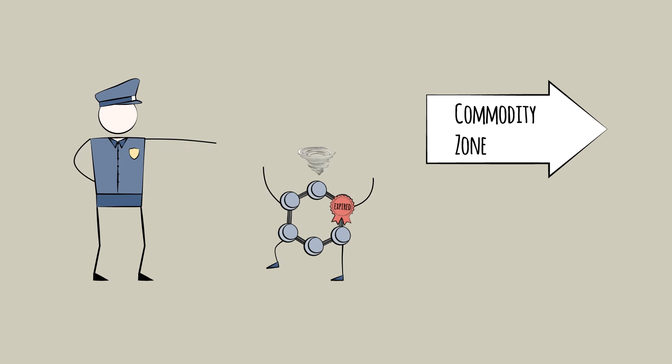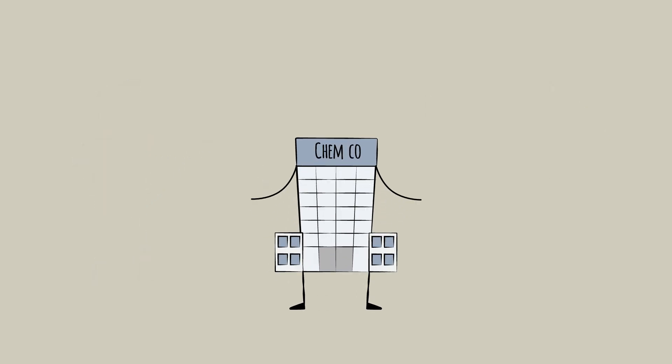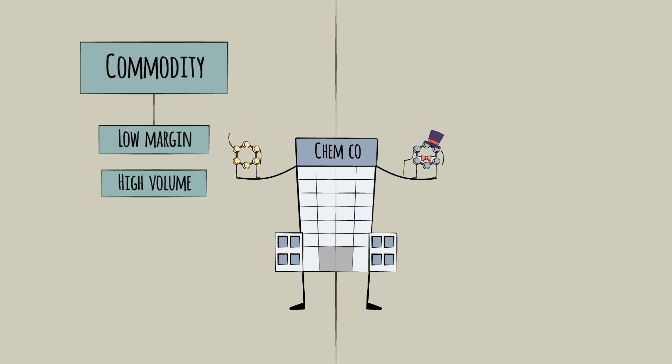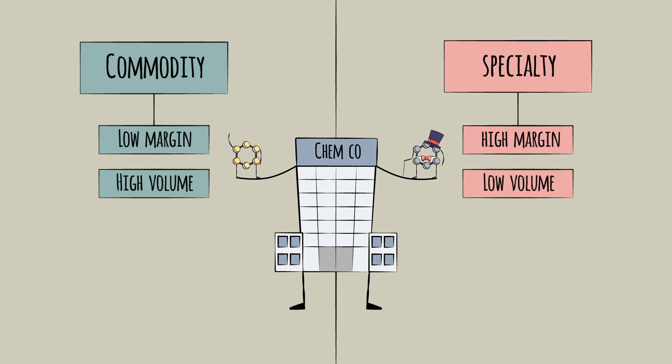Many chemical companies pursue a mix of both commodities and specialties. Commodities deliver lower margins but at high volumes. Specialties help expand into new sources of demand at higher margins.